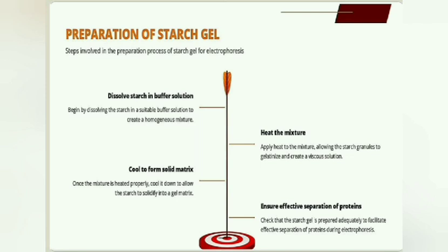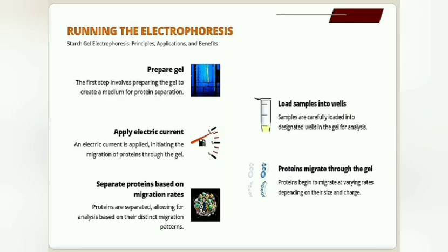The starch is then heated and cooled with an appropriate buffer, and finally it sets as a gel. High porosity starch gels are obtained by using 2% starch, whereas low porosity gels are prepared by using 10 to 15% starch.